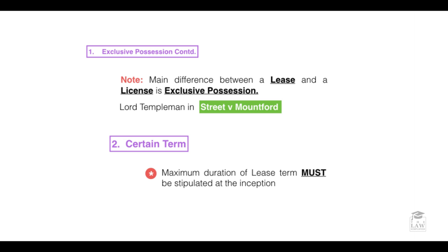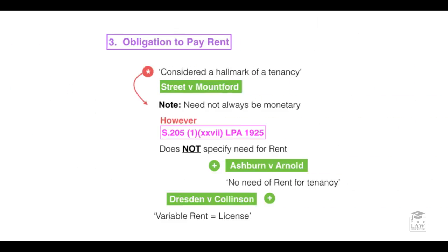The second characteristic outlined in Street v Mountford is certainty of terms — in simple terms, whether there is a maximum duration of the lease stipulated. The third characteristic is the obligation to pay rent. The dicta in Street defined this as a hallmark and cornerstone of a tenancy, since consideration must pass. However, the consideration or rent need not be monetary. Conversely, the Law of Property Act 1925 does not specify the need for rent.